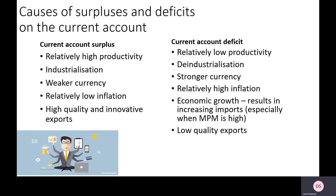Now for the causes of surpluses and deficits on the current account. The UK has a current account deficit — inflows are less than outflows. One cause could be low productivity: if your economy has poor productivity, goods are not competitively priced across the world, you lack absolute and comparative advantages in production, and there'll be low demand for your country's goods. Your own citizens will buy foreign goods instead. So lower productivity than other countries means falling export demand and rising import demand, worsening the current account.